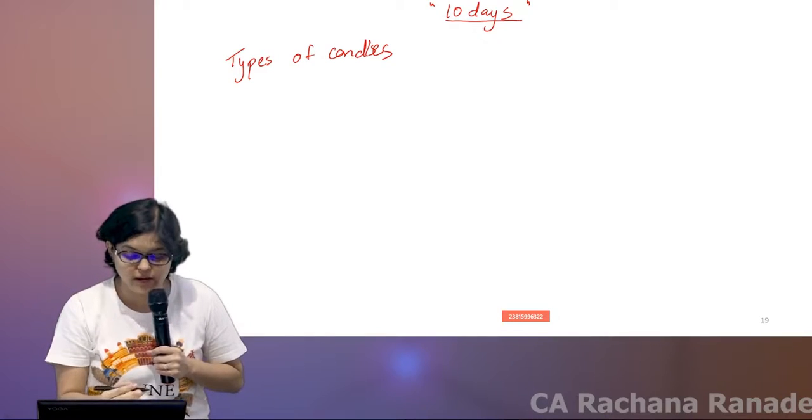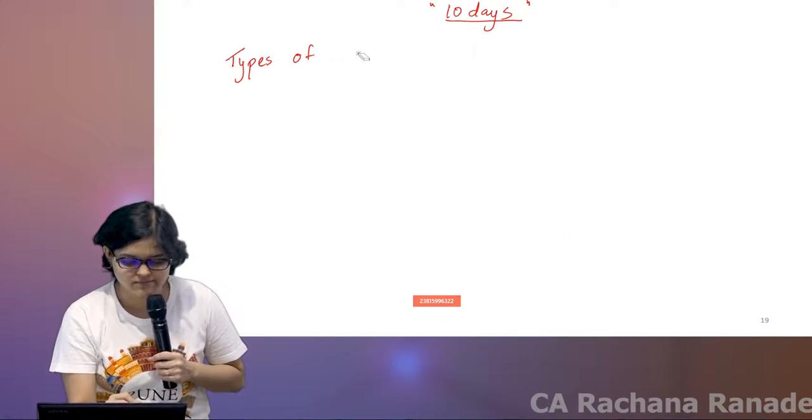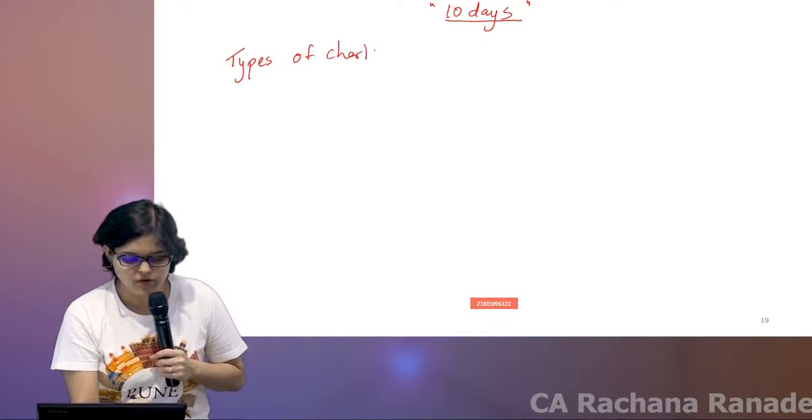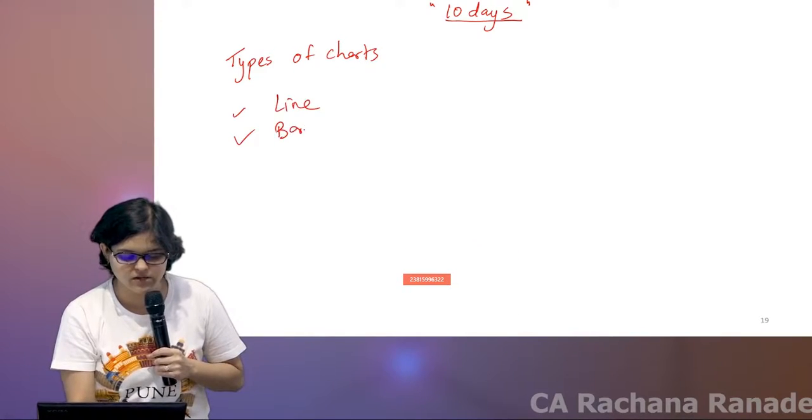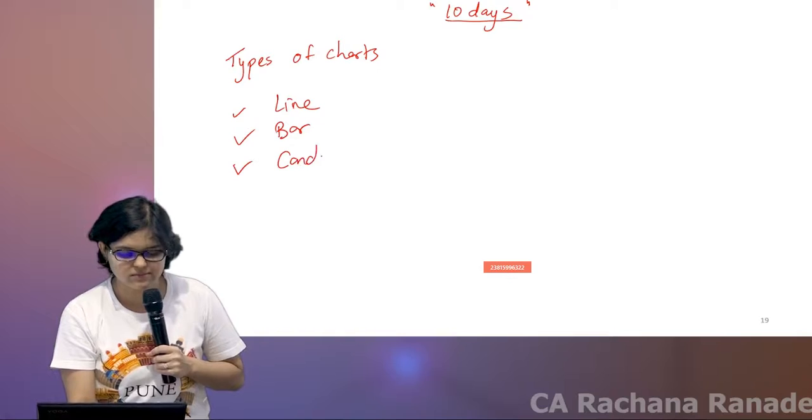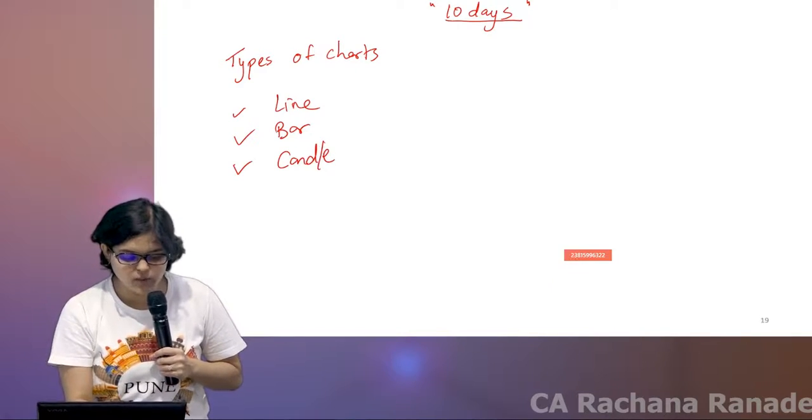Actually we talked about types of charts. We talked about a line chart, we talked about a bar chart, and we talked about a candle chart. Then once we did the candle, then we talked about types of candles.